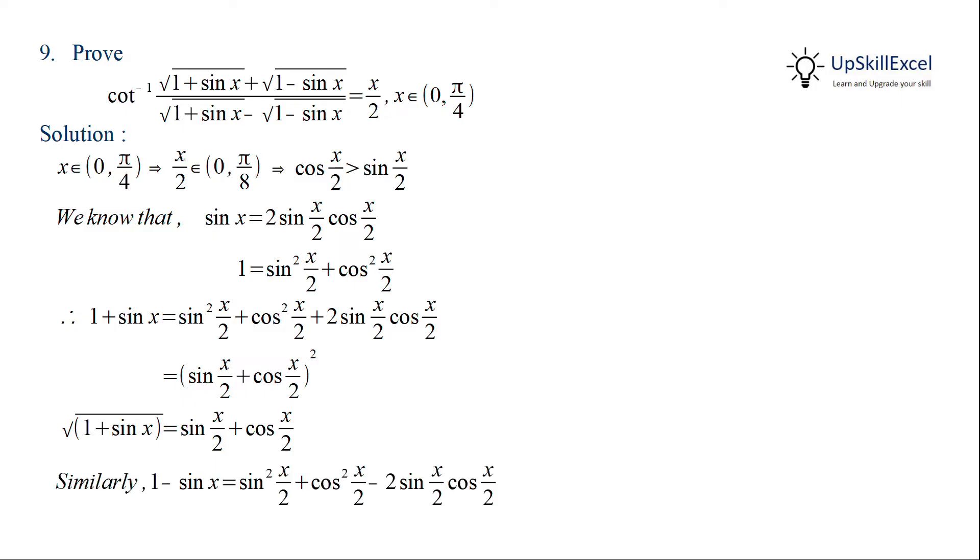Similarly, we can find 1 minus sin x, but we need to note that cos x by 2 is greater than sin x by 2 in the given domain. So here square root of 1 minus sin x will be equal to cos x by 2 minus sin of x by 2.